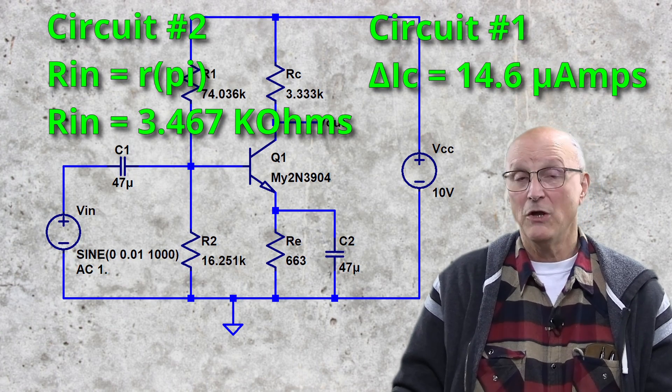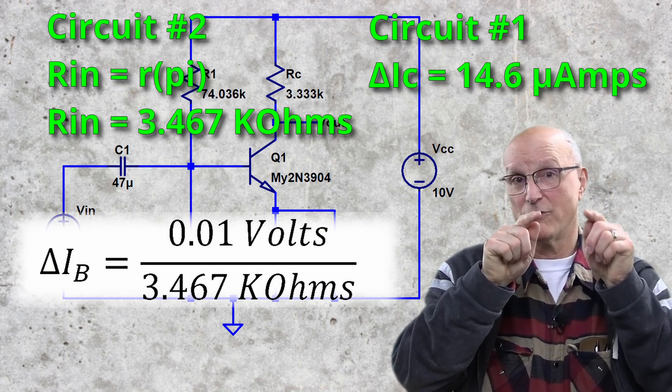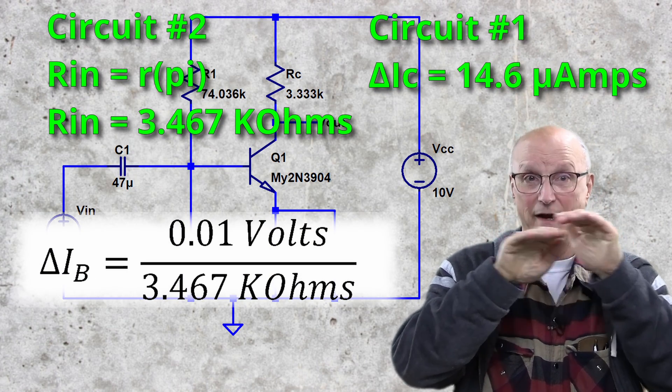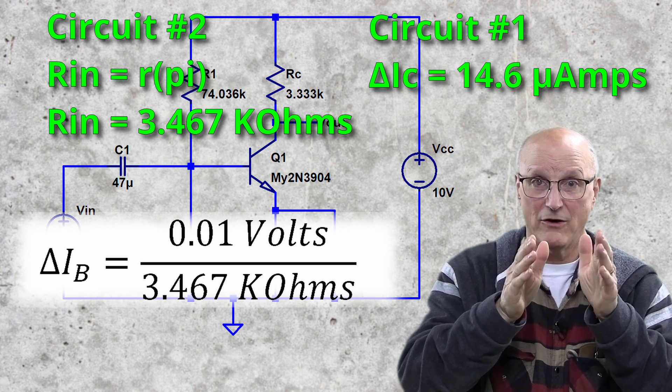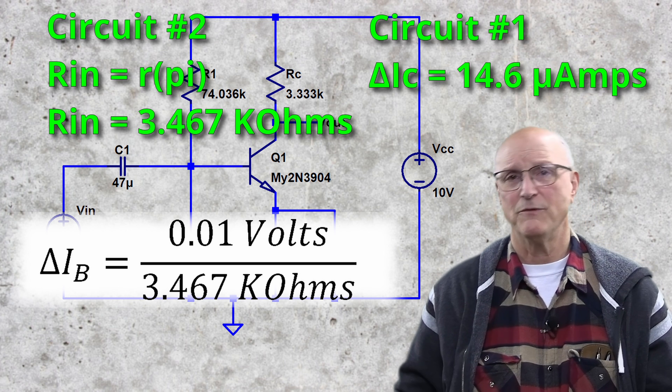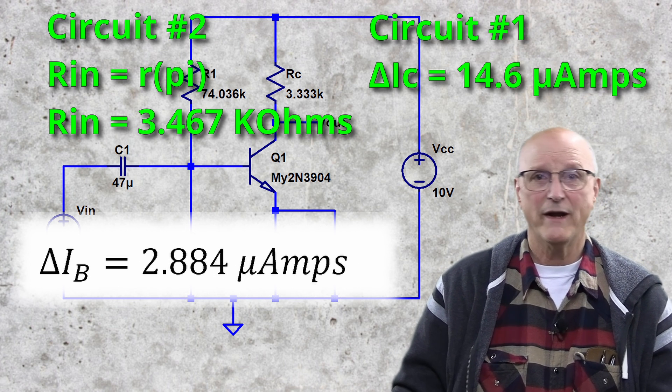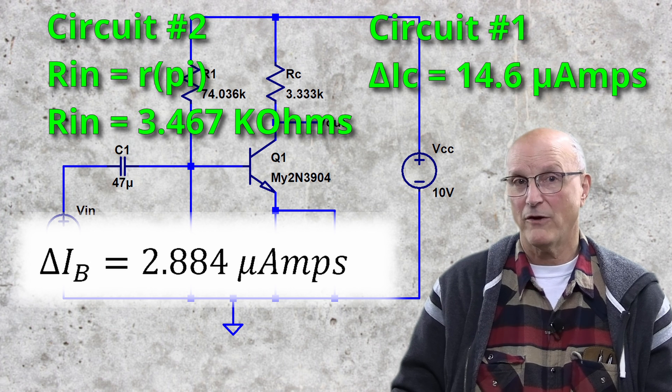For the second circuit, we would have 0.01 volts divided by Rpi, 3.467 kilohms, giving us a change in base current of 2.884 microamps.